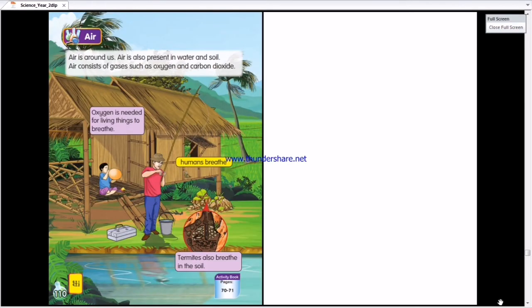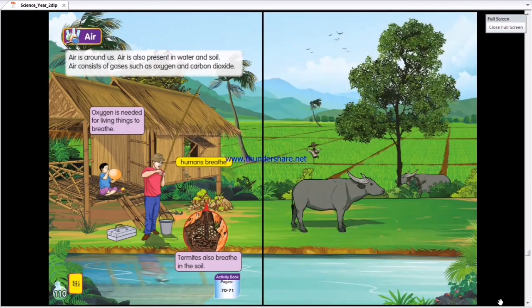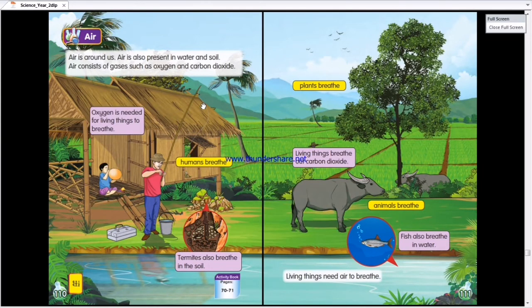Okay, next. Next will be air. Air is around Earth. And air is also present in water and soil.